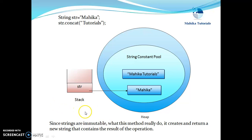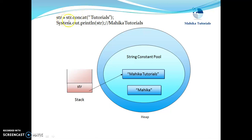Since string objects are immutable, what this method really does is create and return a new string that contains the result of the operation. If we want to print "Micah tutorials" rather than "Micah", what we need to do is store the result of this method call back in the reference variable str. In that case, str.concat("tutorials") will create a new object with the resultant value "Micah tutorials", and we change the reference of str to the result of this operation. So now str will refer to this newly created string, and if we print str we will get "Micah tutorials".